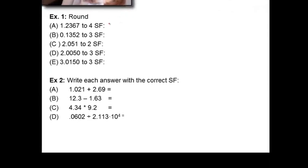Okay. So this first example is just a bunch of rounding examples. So to four significant figures, that means one, two, one, two, three, four. So I need to get rid of the seven. So that's just 1.237. I need to go to three sig figs here, which is that place. Okay. That's just going to be 0.135. Here I need to go to two sig figs. So this is interesting because 51 is bigger than 50. So that's going to push me to 2.1.